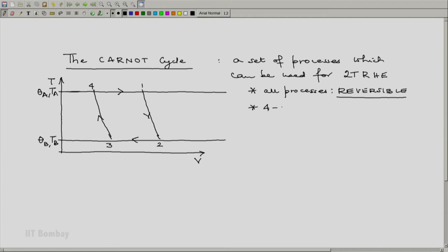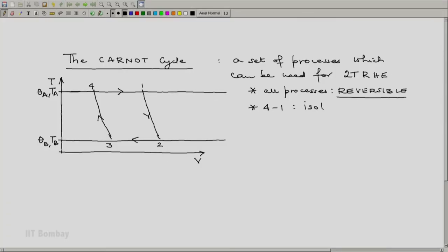Process 4-1, remember it is a cycle so I can start analyzing it from one point, complete the analysis and I return to that point. From which point you start, it is left to you. Let us start with the process 4-1. This is an isothermal process and heat is absorbed by the system from the high temperature reservoir. Let me show that the heat absorbed is Q_absorbed.